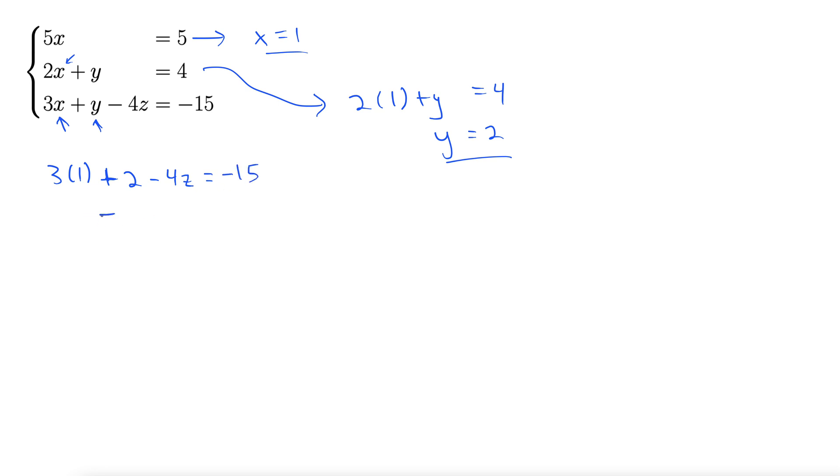5 minus 4z equals negative 15. Negative 4z, I'm subtracting 5 from both sides, equals negative 20. Divide both sides by negative 4, we get z then must be 5.